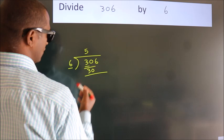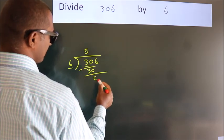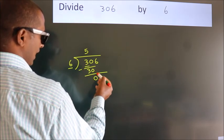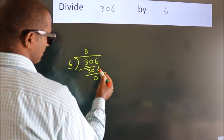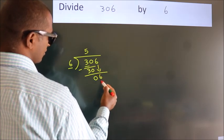Now, we should subtract. We get 0. After this, bring down the beside number. So, 6 down. So, 6.